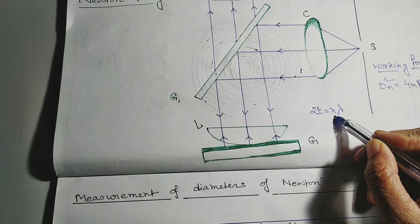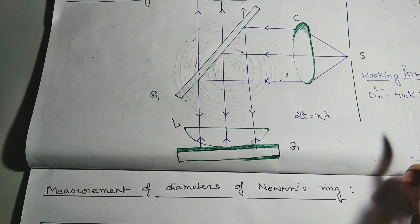Where small n equals to order numbers 0, 1, 2 and so on.